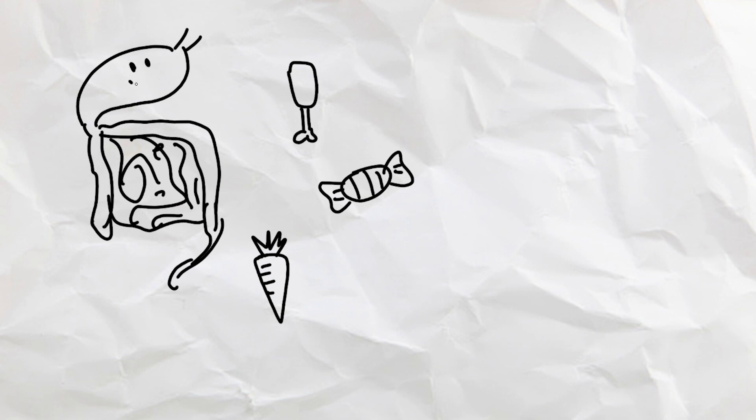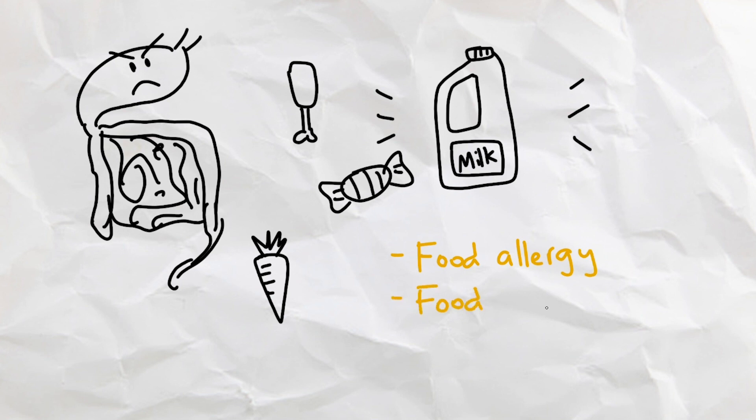Our digestive system generally isn't super picky when it comes to food. As soon as something reaches the stomach, it will try to digest it. However, some of us don't have that luxury, as our body just seems to reject certain kinds of foods. In this video, we will go over what food allergies and intolerances are, and why some of us have them in the first place, especially lactose intolerance.